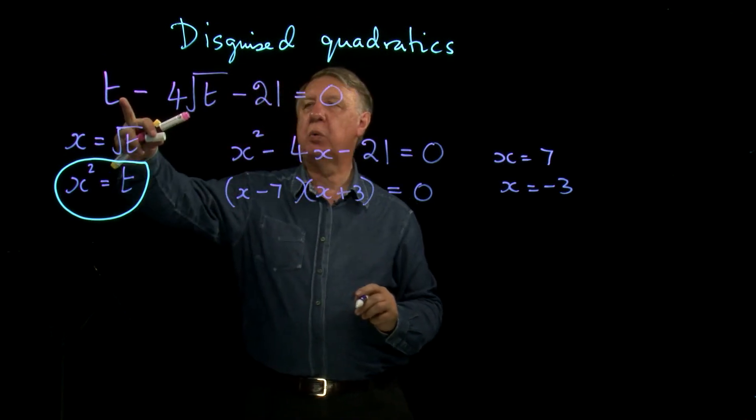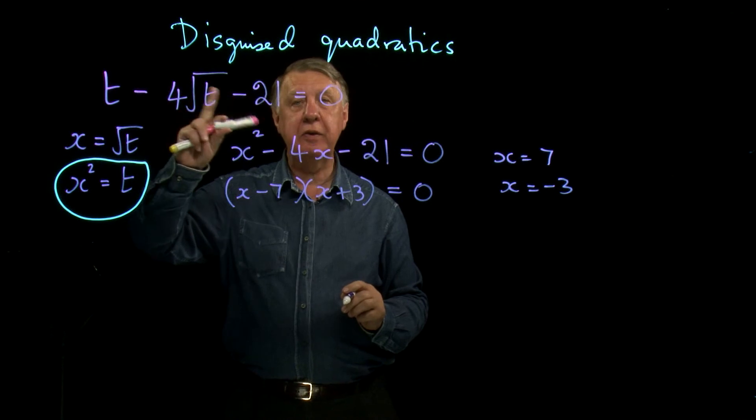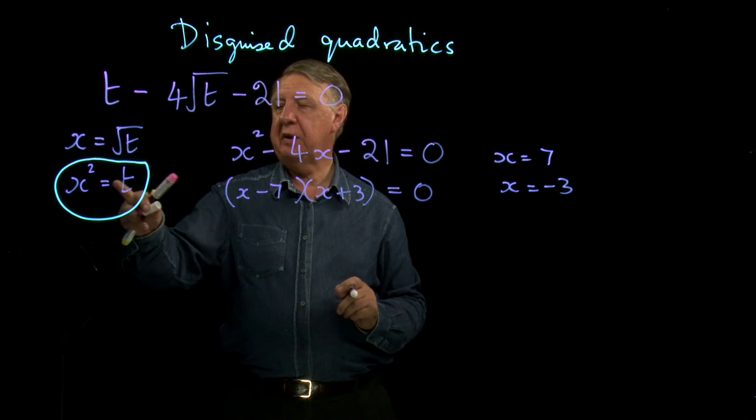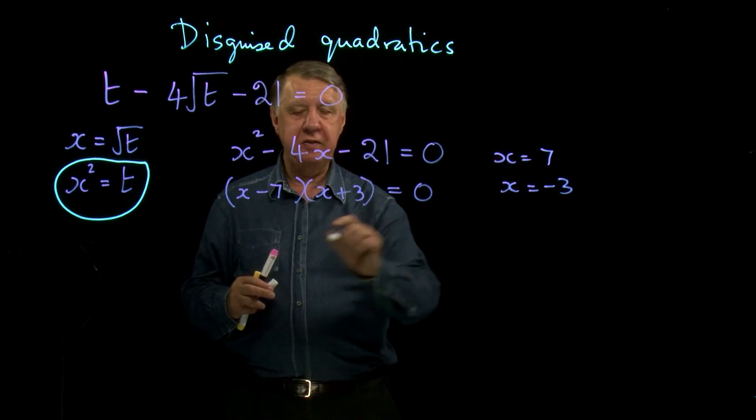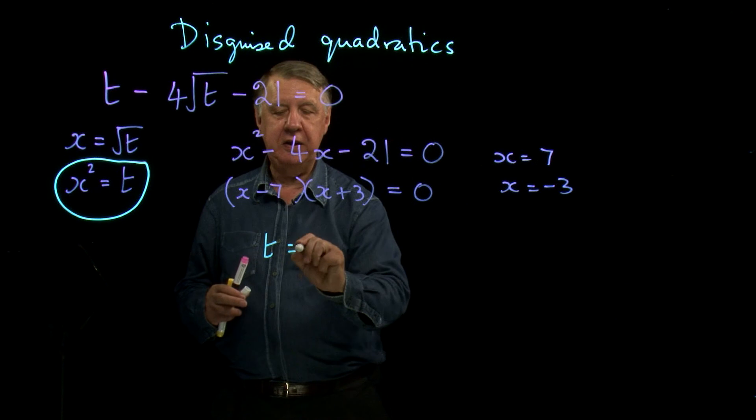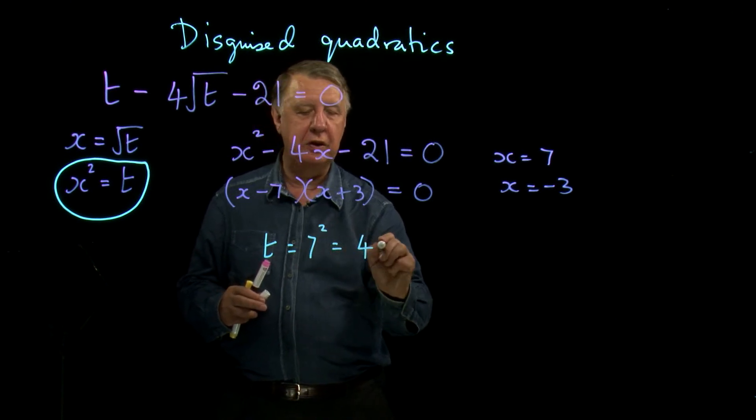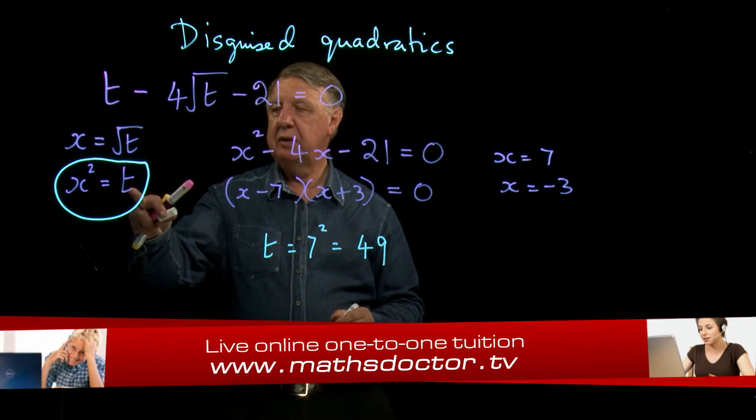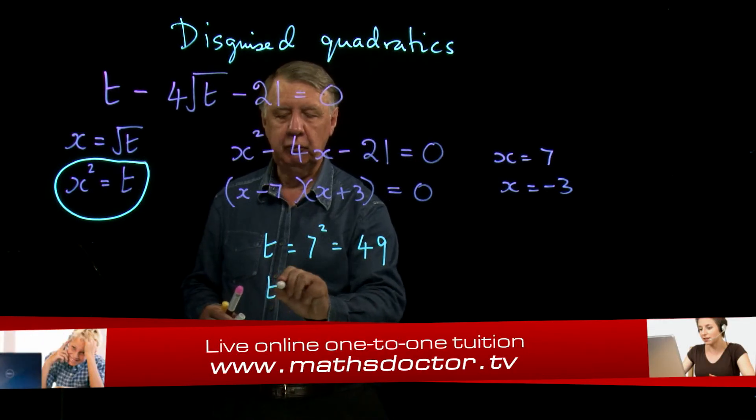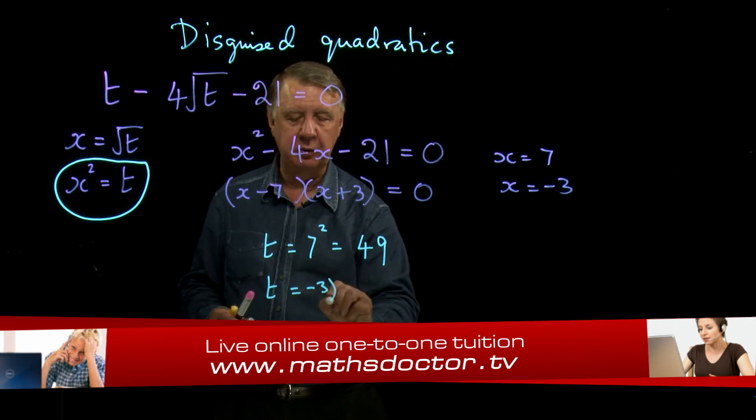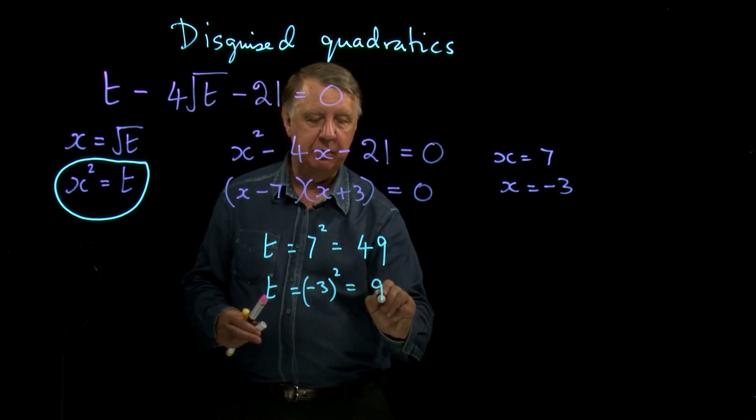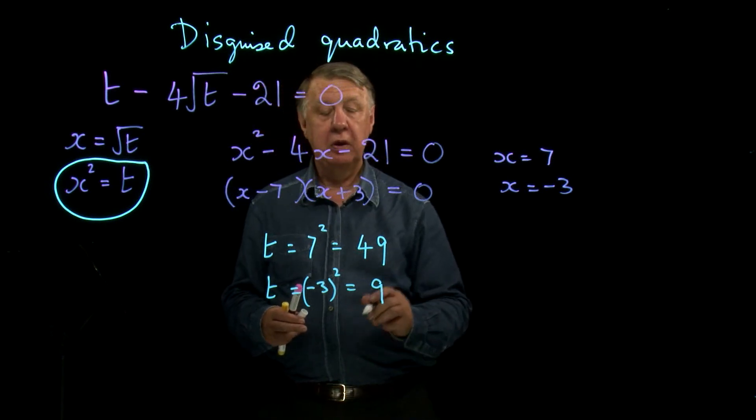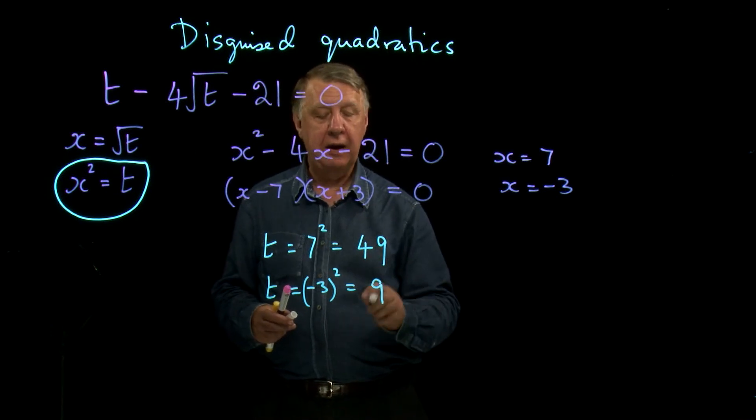Remember, this time, our original equation is in t. So, it's t I'm trying to find, not x. This says that t is equal to x squared. So, if x is 7, t is 7 squared, which is 49. And if x is negative 3, t is negative 3 squared, which is 9. So, therefore, my two solutions are 49 and 9.